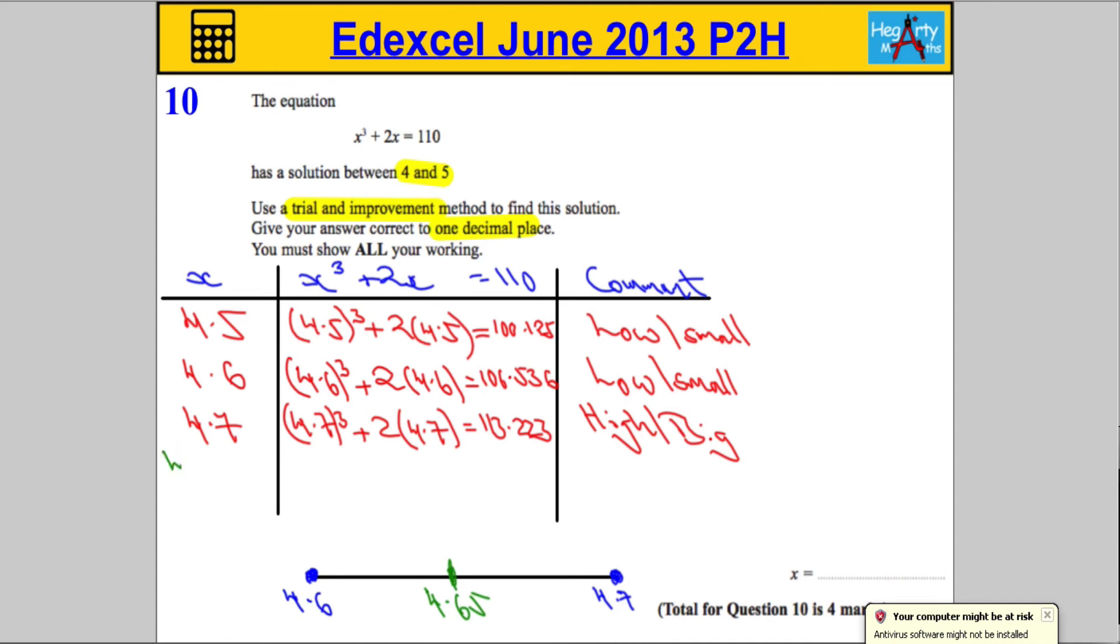So we're going to test 4.65. I'm going to do the exact same thing: 4.65³ plus two lots of 4.65. And let's see how that works out.